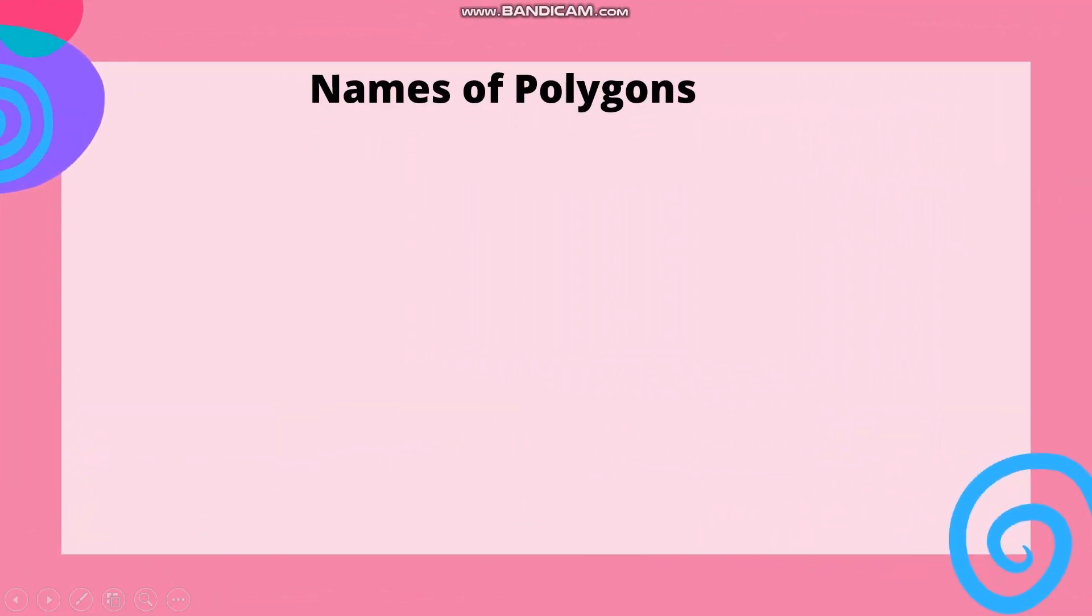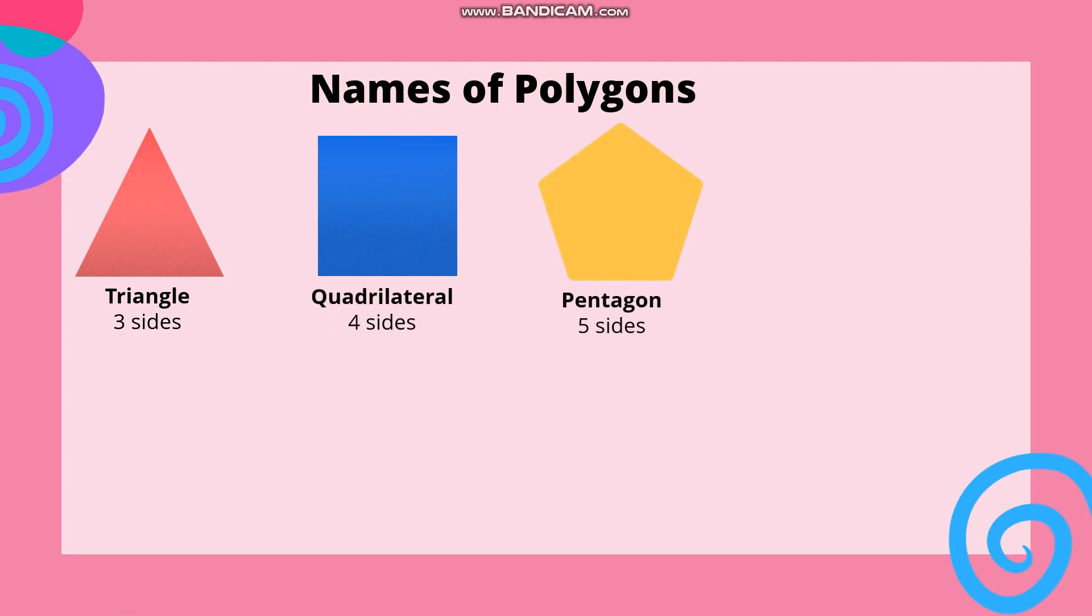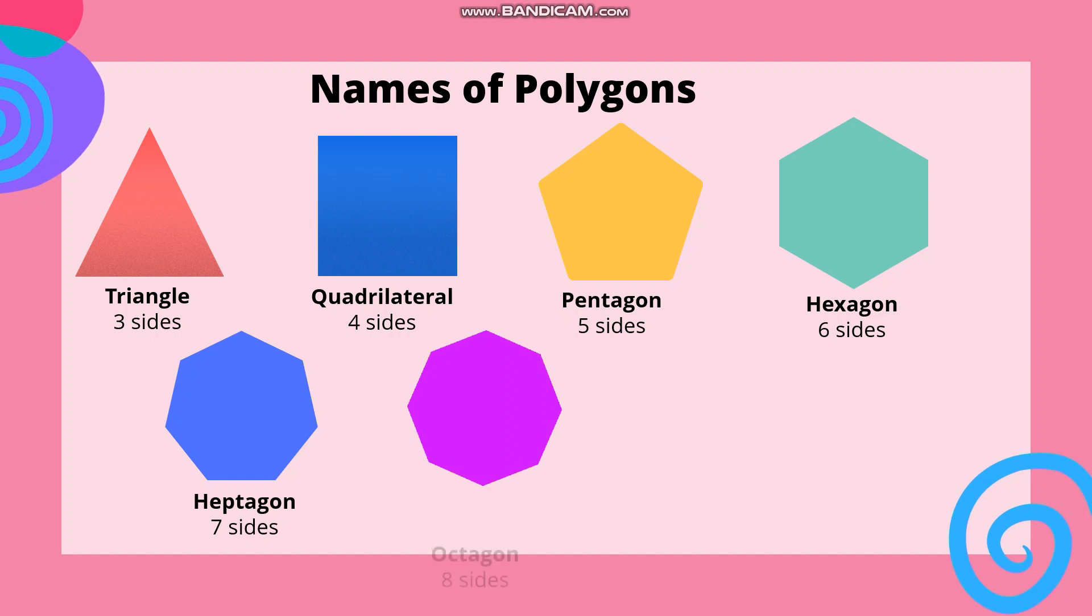Names of polygons: Triangle - 3 sides. Quadrilateral - 4 sides. Pentagon - 5 sides. Hexagon - 6 sides. Heptagon - 7 sides. Octagon - 8 sides. Nonagon - 9 sides. Decagon - 10 sides.